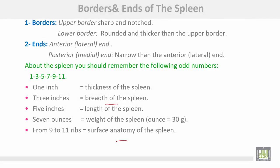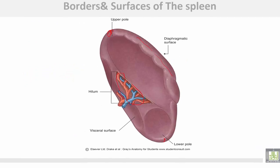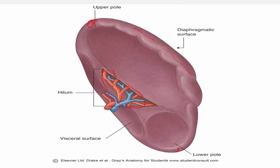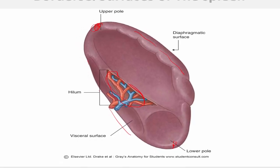A helpful mnemonic: remember the odd numbers from one to eleven. One inch is the thickness of the spleen; three inches is the breadth; five inches is the length; seven ounces is the weight; and from nine to eleven are the ribs corresponding to its surface anatomy. The upper border is notched, and the hilum is located on the medial surface between the lateral and medial ends.